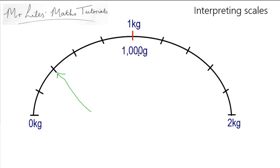Now, this might make it a bit easier because what you can then do is count how many lines, not including zero kilograms, that are up to the 1 kilogram mark. And there are 1, 2, 3, 4, 5.